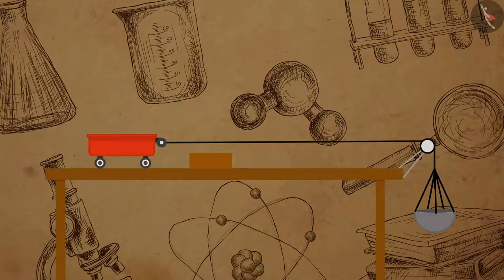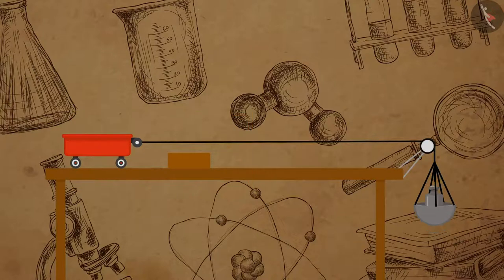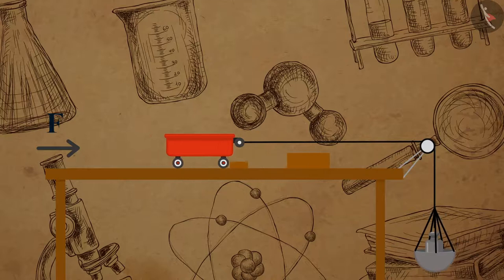Here a wooden block with fixed mass is placed at some distance from a trolley. Then a known mass is kept on the pan to displace the trolley.